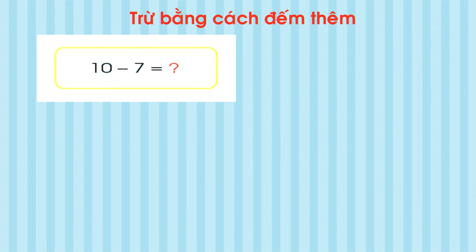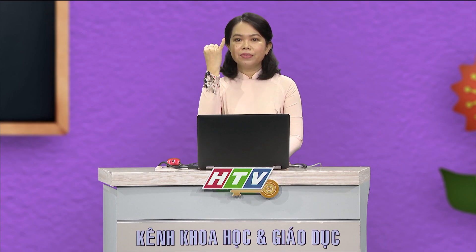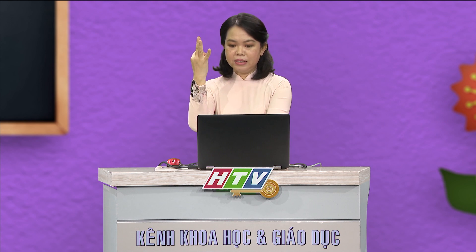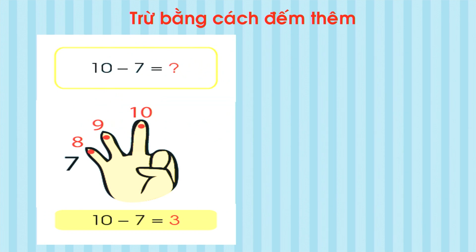Chúng ta sẽ đếm thêm từ số bé là 7 tới số lớn là 10. Mời các em cùng dơ tay lên và thực hiện cùng cô. 7 rồi đến 8, 9, 10. Số ngón tay đếm chính là kết quả. Cô vừa đếm thêm 3, vậy kết quả 10 trừ 7 sẽ bằng 3 đấy các em.